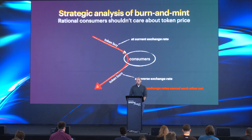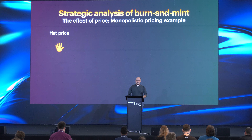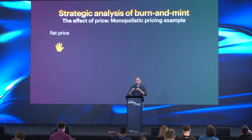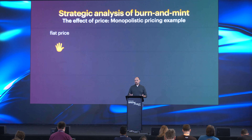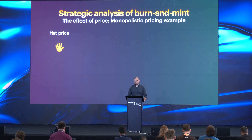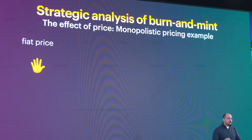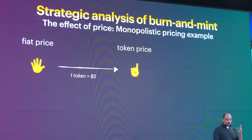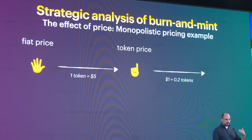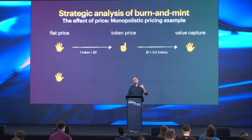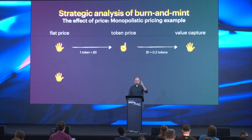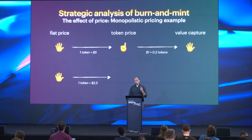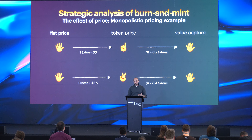What that means is: imagine there was just one participant on the exchange — the platform itself setting the price, like in a fully planned economy. If the fiat price is five and the token price is also five, you get one token, and when you sell that service your value capture is five. Now if as the monopolist you set the token price to 250, the service is worth two tokens, but your value capture is still five.